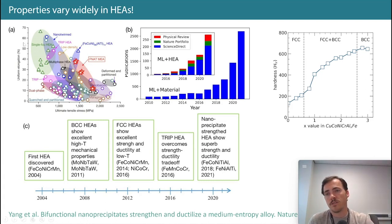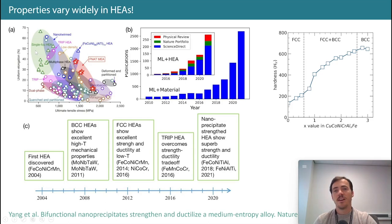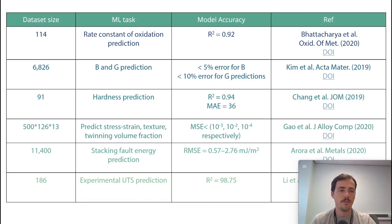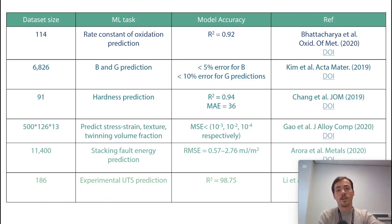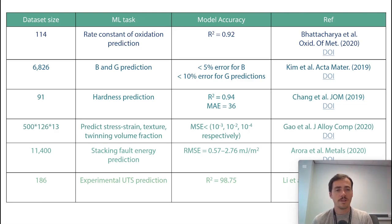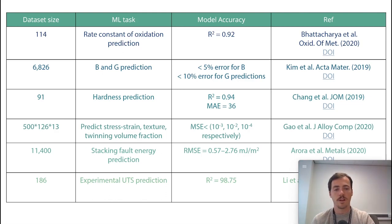If you look at all the different types of HEAs that have emerged in 20 years, there are quite a few categories with really different properties — for example, looking at elongation versus ultimate tensile stress, there are many different performers. A lot of that is related to the phases present, but predicting those properties is still an open problem. So let's look at how ML has done for property prediction.